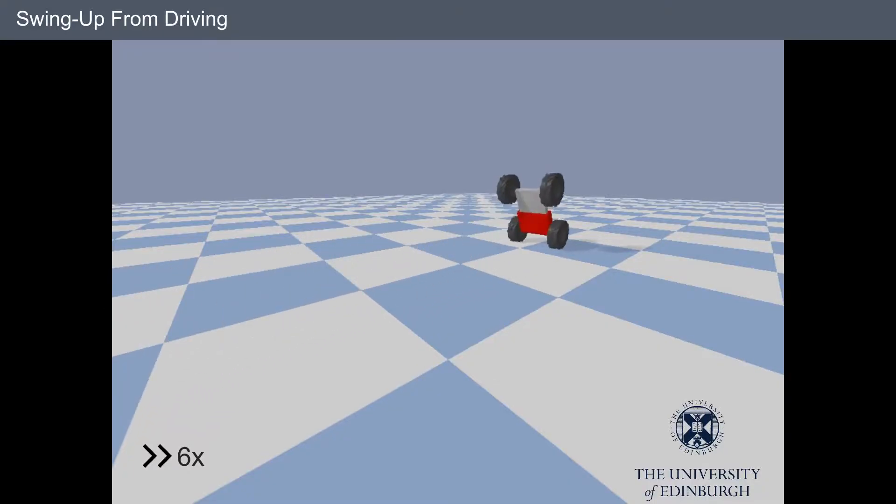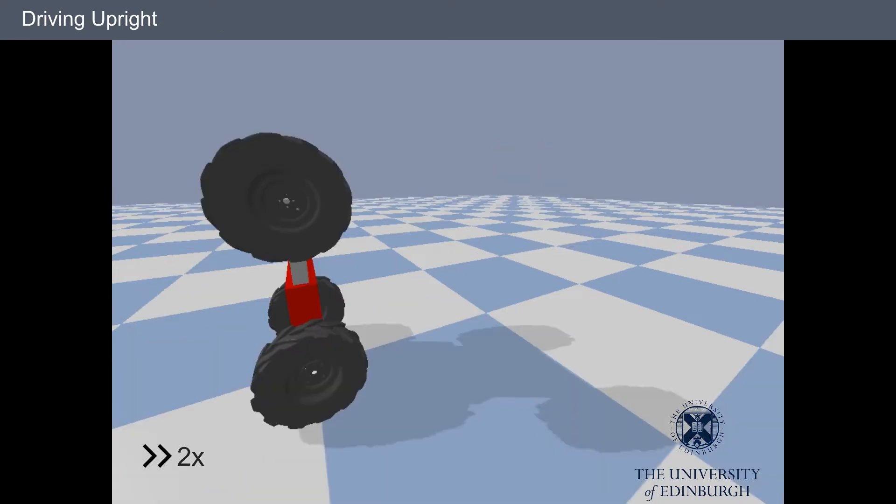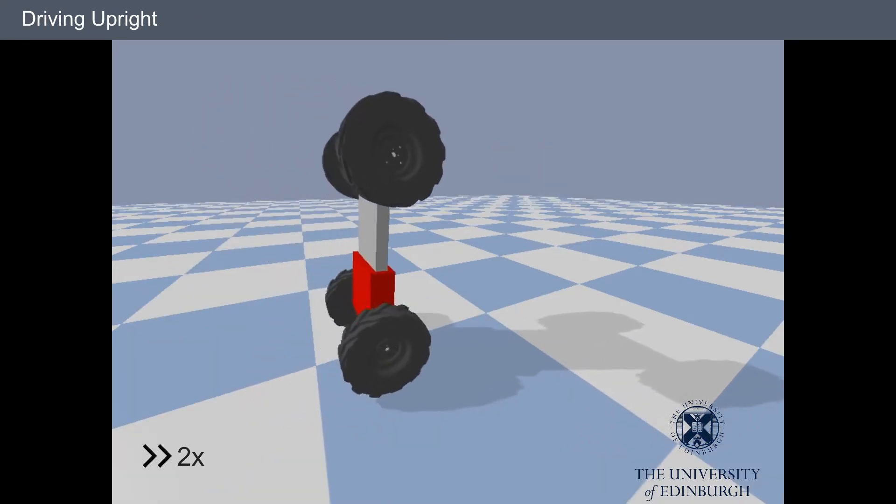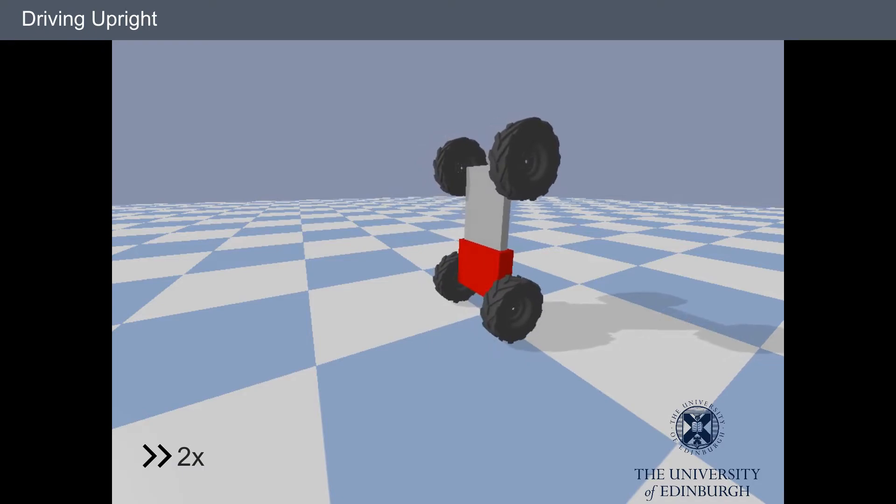In this experiment, we show that the robot can swing up from driving forward. The controller is also able to drive forward while balancing on two wheels, as shown here.